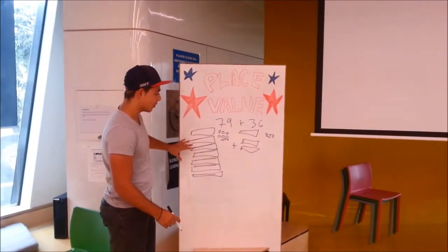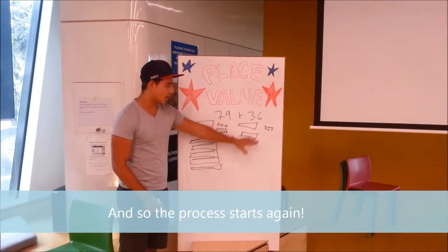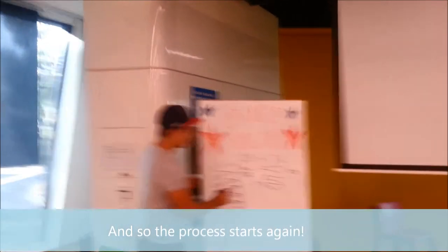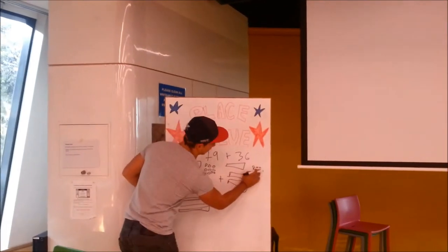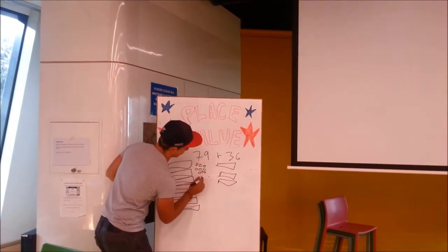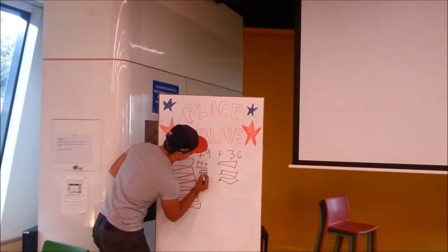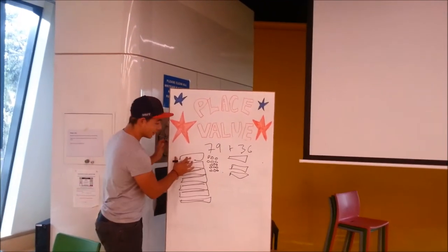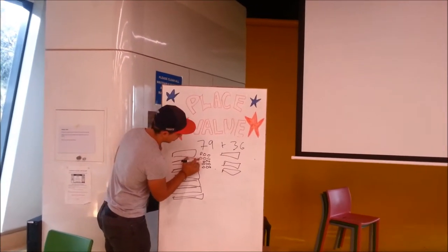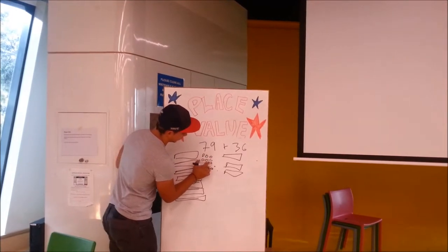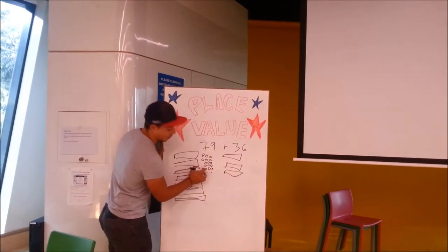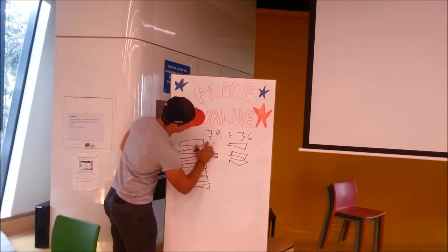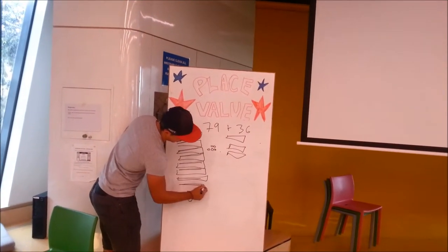Here we've got 79 with MAB blocks and symbols, and 36 over here. Initially, once again, we're going to add the units. As you can see, we've got 9 and 6, making 15 units total. Since we've got more than 10 units, we can create another 10 block. Counting them out — 1 through 15 — that leaves us with 5 units and 1 extra ten to carry into the equation.